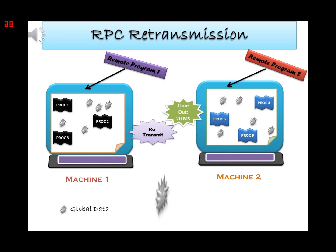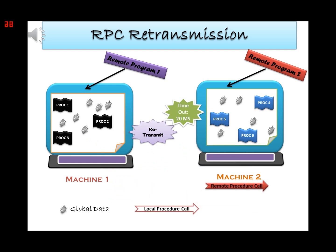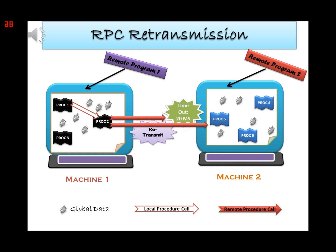A local procedure call means calling a procedure locally within a single remote program. In a remote procedure call, we are calling from one remote program to another remote program. Considering an RPC with a default timeout of 20 ms, that RPC is retransmitted again after that timeout. That's all for RPC retransmission.